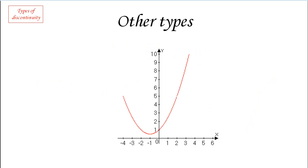There are other types of discontinuity worth briefly mentioning. A displaced point is like a single point hole but where the function is defined — just somewhere else. In that situation the limit as x approaches c exists, the function exists, but the two are not equal. This is a pathological case found in calculus textbooks but not in applied problems we'll be studying, so we won't spend much time on it.